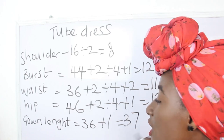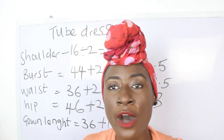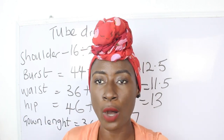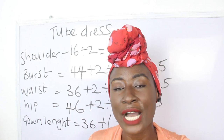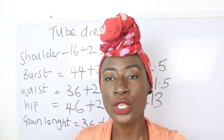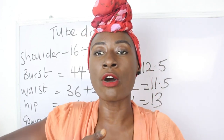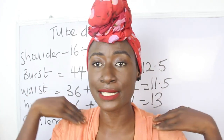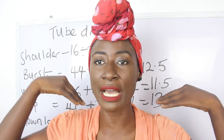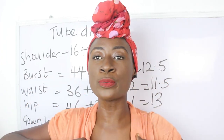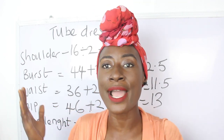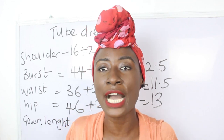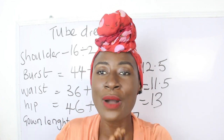For our tube, it doesn't start from the shoulder — it starts around the upper bust. You have to determine how many inches you want to take off from the shoulder. This measurement of 37 inches starts from the shoulder. If you want your tube to start around your bust area, go ahead and deduct about 5, 6, or 8 inches depending on how full you want it to be.